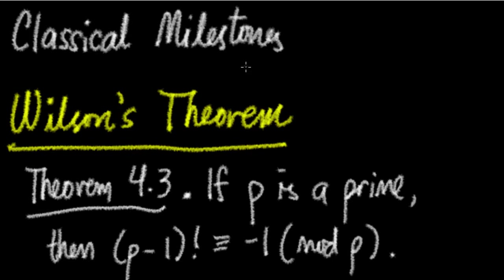We'll start with Wilson's theorem. These classical milestones will feature three classical results: namely Wilson's theorem, which we're going to talk about today, Fermat's little theorem, and Euler's theorem, which have played a significant role in the development of the theory of congruences. All three theorems illustrate the power of congruences and the congruence notation.